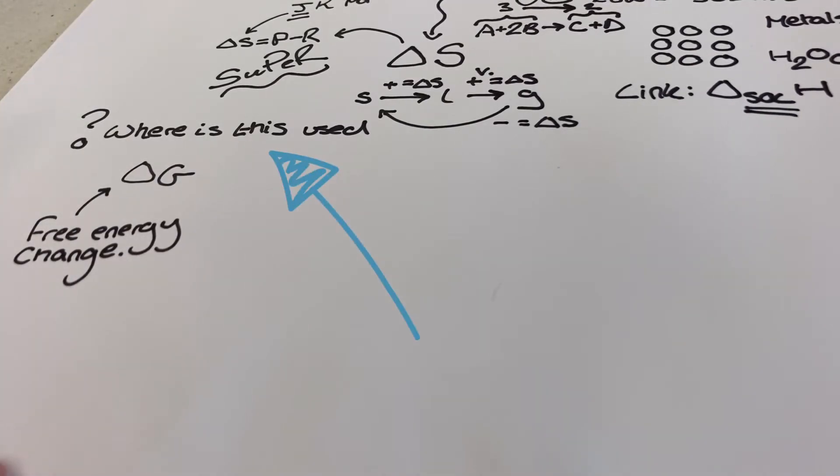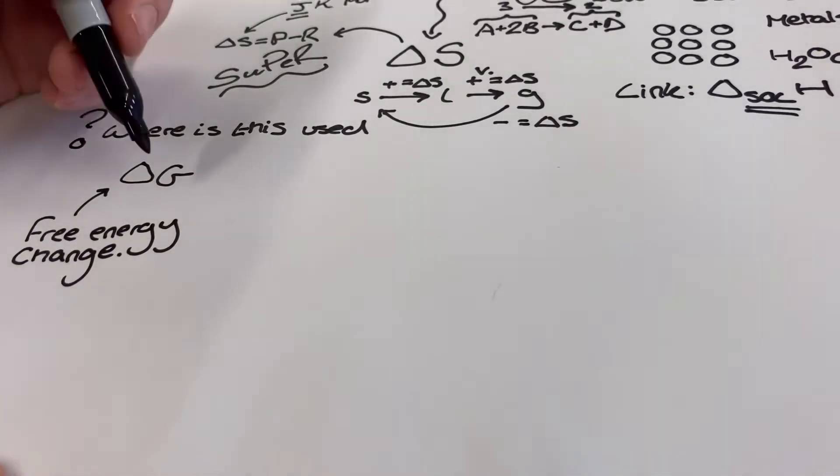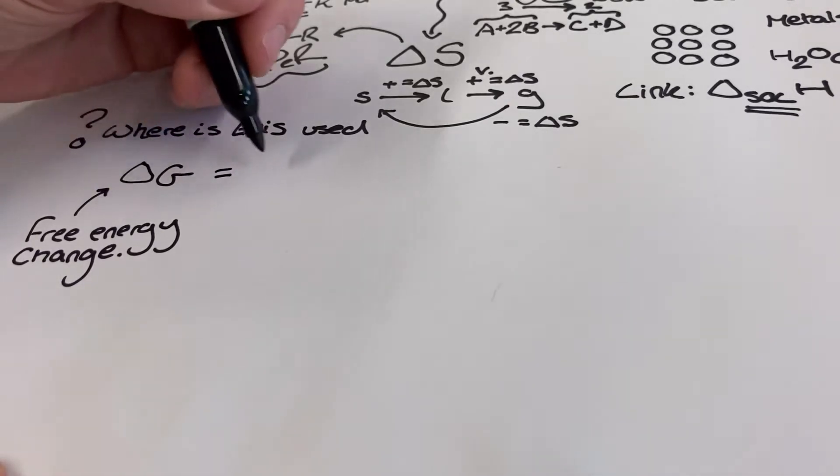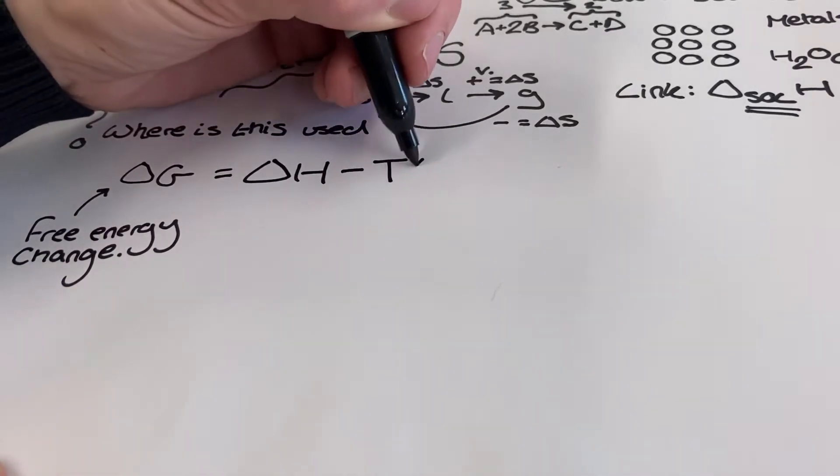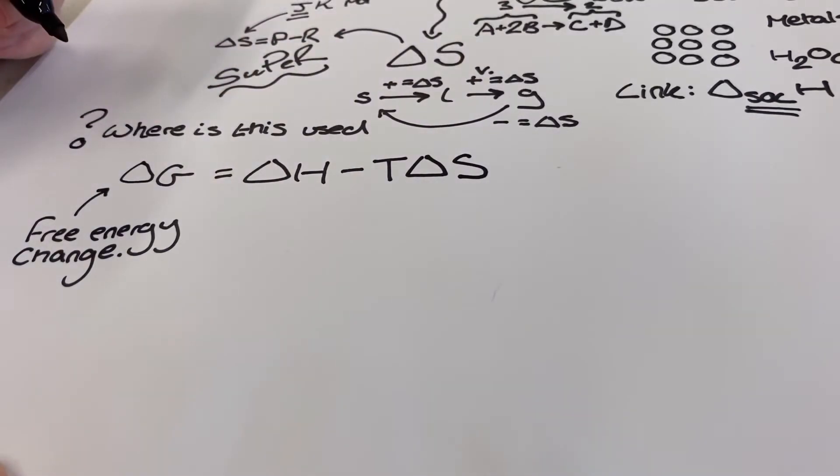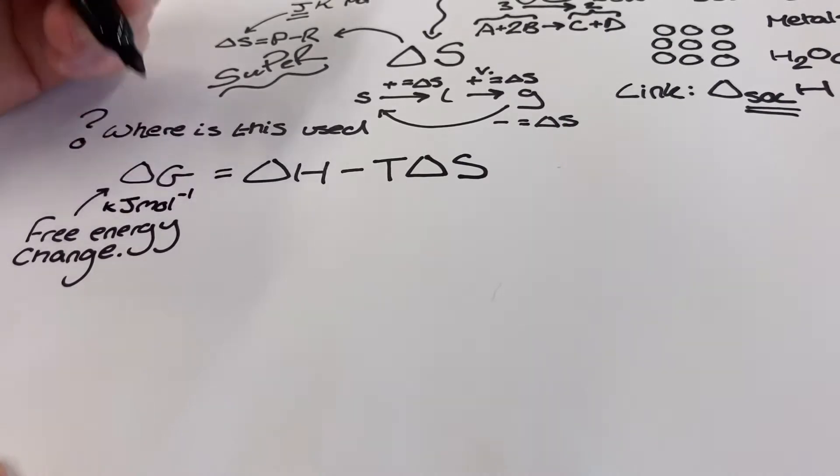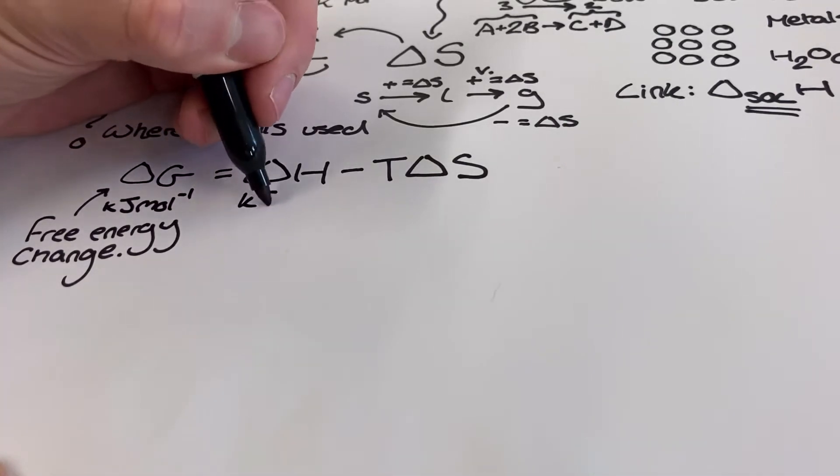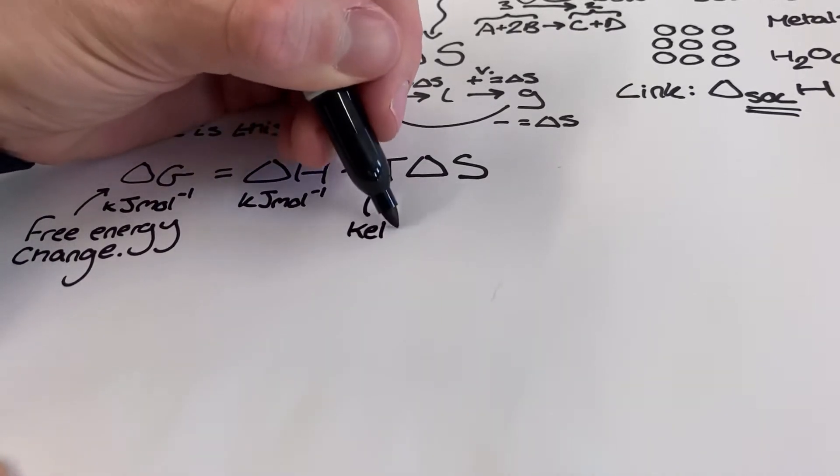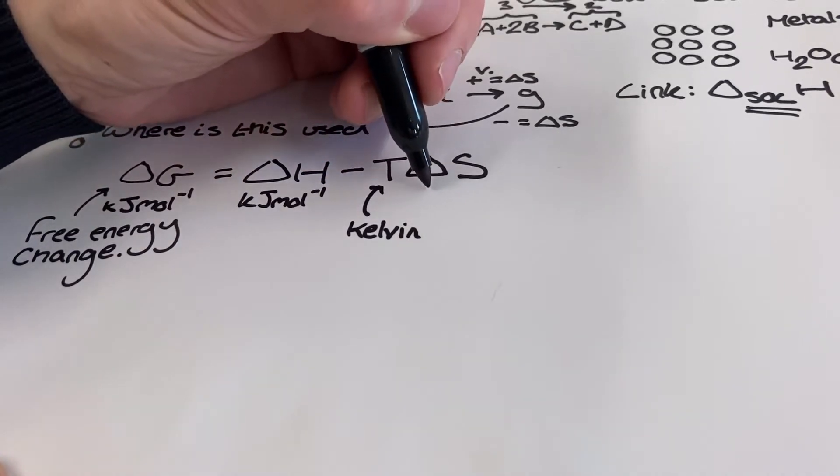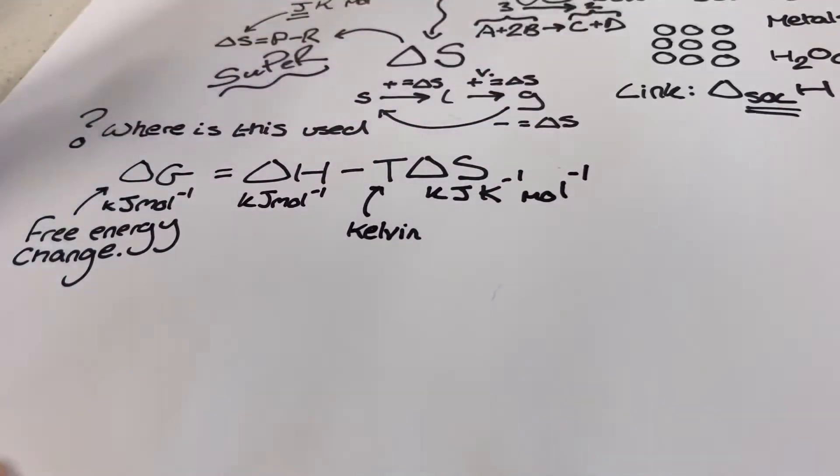We use entropy in something called the Gibbs equation. The Gibbs equation is used to determine the feasibility of a reaction, whether the reaction is feasible or not. Now we've not used that term before. A feasible reaction is one that once started will carry on to completion without any energy being supplied to it. The feasibility of a process depends upon the entropy change and the temperature of the system, so we use the term TΔS for that, and the enthalpy change of the system, which you should recognize as ΔH. So we have the Gibbs equation, which is ΔG, the free energy change, equals ΔH minus TΔS.